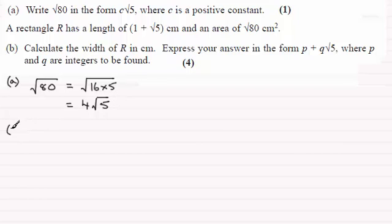And in part B we're told that a rectangle R has a length of 1 plus root 5 centimeters and an area of root 80 centimeter squared, and we've got to calculate the width of R in centimeters, expressing the answer in this format.